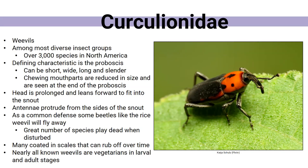Their head is small and elongated, leaning forward to fit with that snout. The antennae protrude from the snout area. As a common defense, some of these beetles — like the rice weevil — actually do fly; a lot of people don't know that. Some also just play dead when disturbed — people will think they're dead, but they're just playing it. Many of them also have scales that can rub off over time. Nearly all weevils are vegetarians — plant chewers, herbivores of the group — even in both their larval and adult stages.